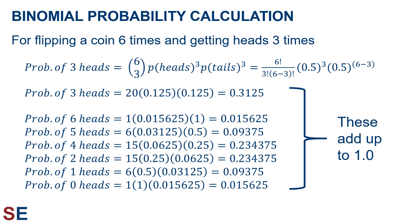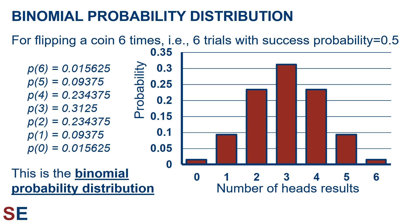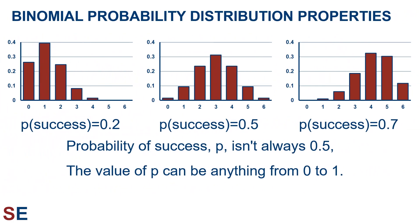If we repeat these calculations for all seven possible outcomes — getting 0, 1, 2, 3, 4, 5, or 6 heads — we get all the probabilities shown. One thing to notice is that all these probabilities sum to 1, because these are all the possible outcomes from flipping a coin six times. A distribution of probability values is called a probability distribution. This is the binomial probability distribution for six trials with a probability of success of 0.5. The probability of success can be anything from 0 to 1, and the distribution would look different for each value.